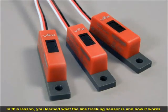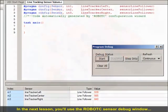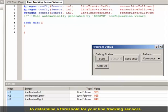In this lesson, you'll learn what the line tracking sensor is and how it works. In the next lesson, you'll use the Robot C sensor debug window to determine a threshold for your line tracking sensors. Thank you.